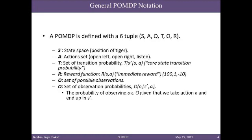In the tiger problem, the cost of a wrong opening is $100, the cost of the listening action is $1, and the reward for a correct opening is $10.